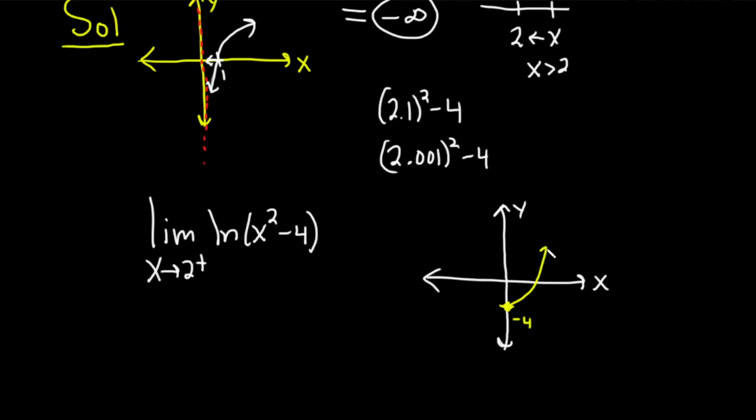and it's going to do something like this and like this. And it's going to cross the x-axis at negative 2 and at 2, because if you plug in negative 2 or 2 into x squared minus 4, you're going to get 0. So this is the graph of x squared minus 4.